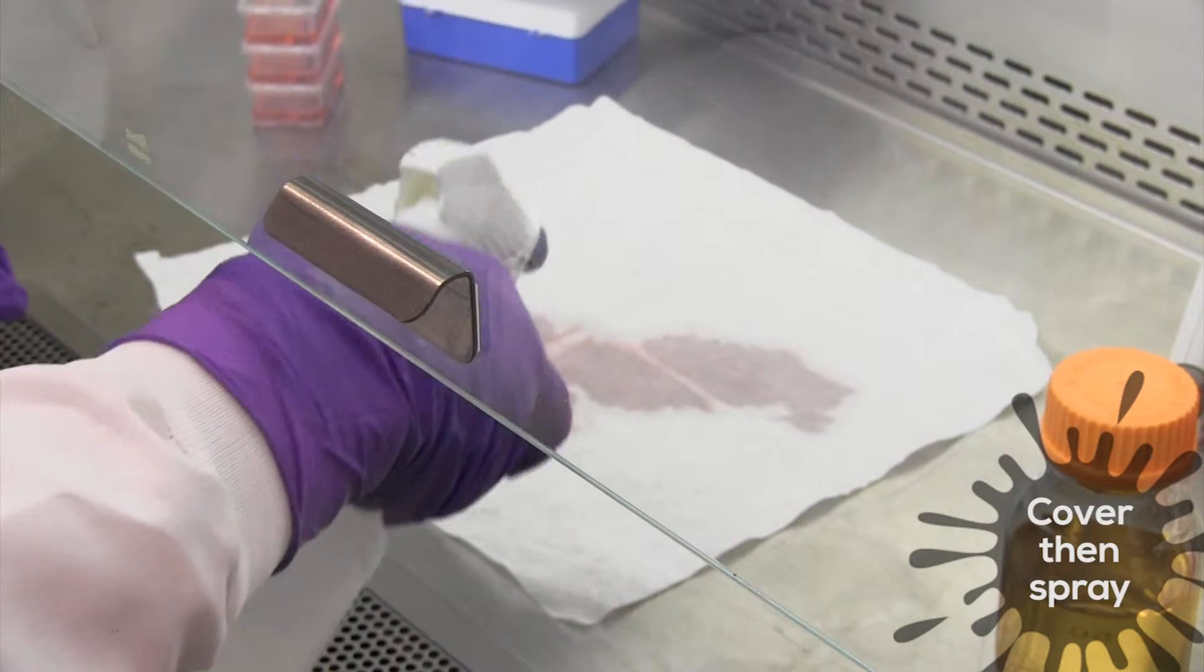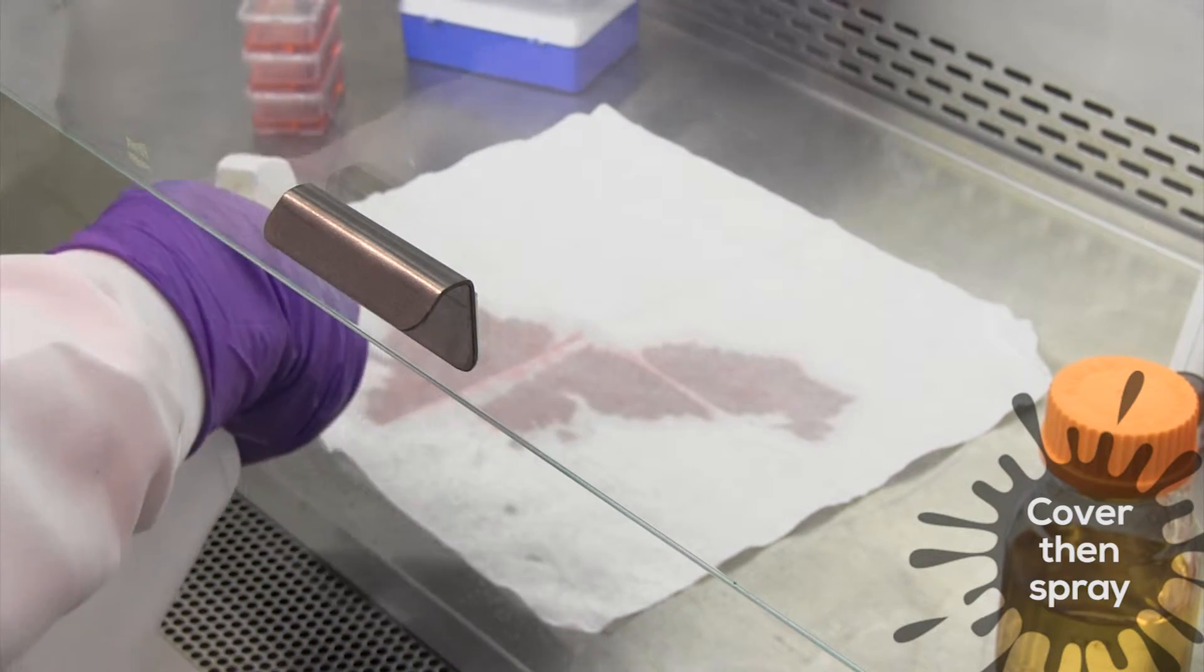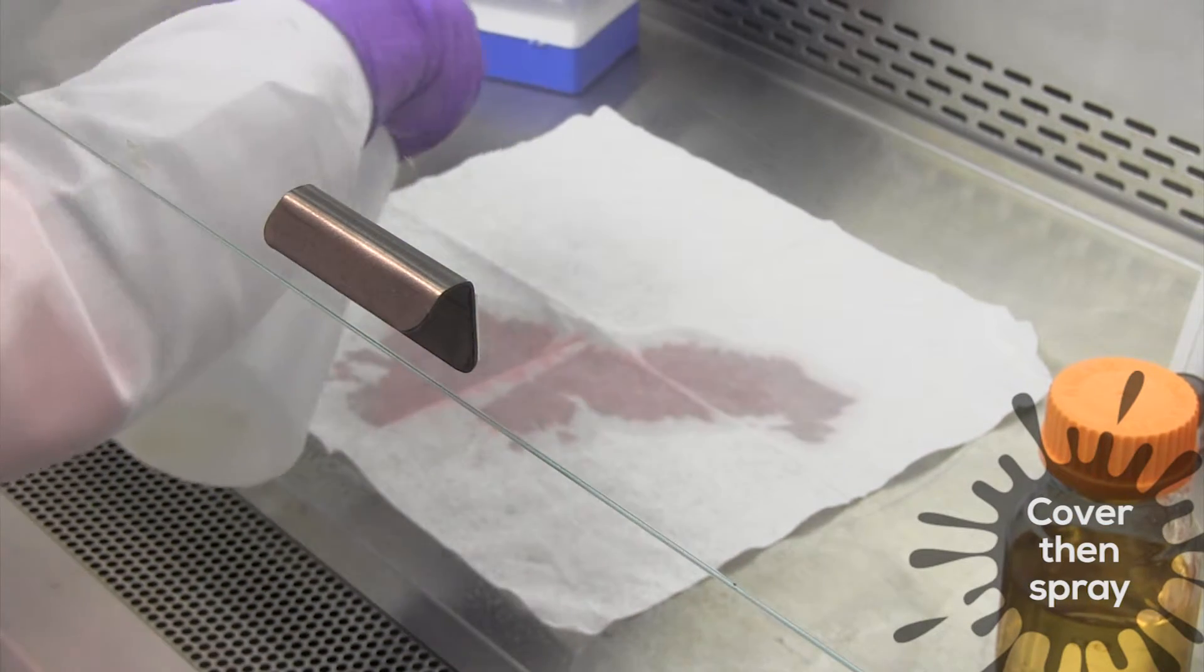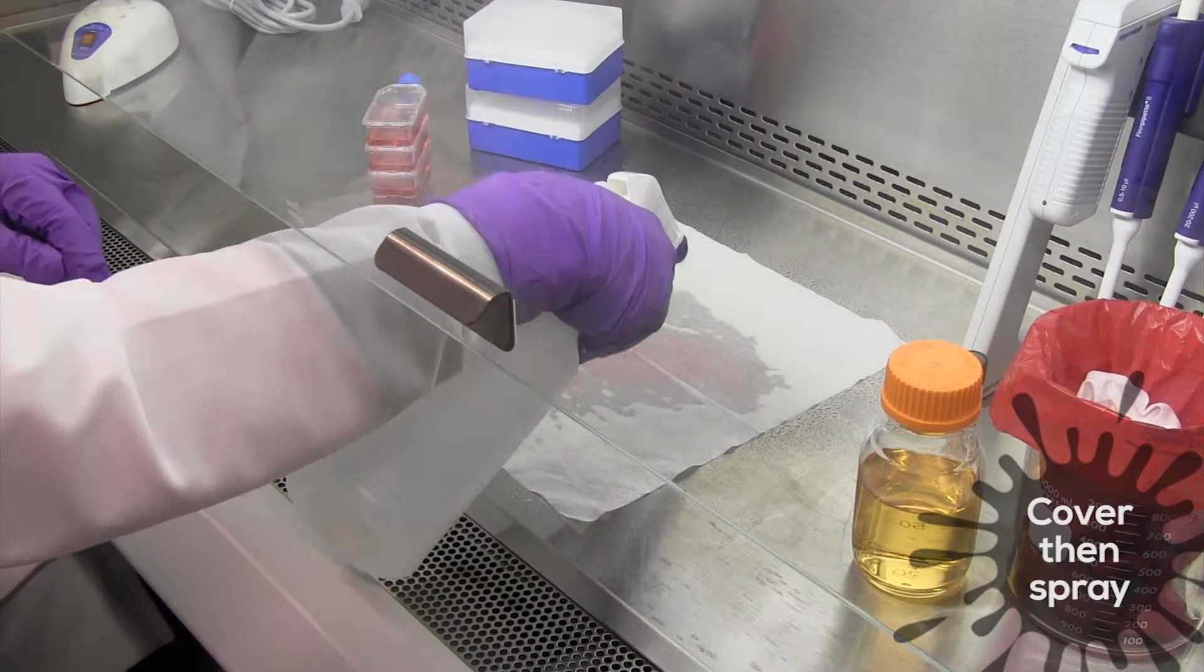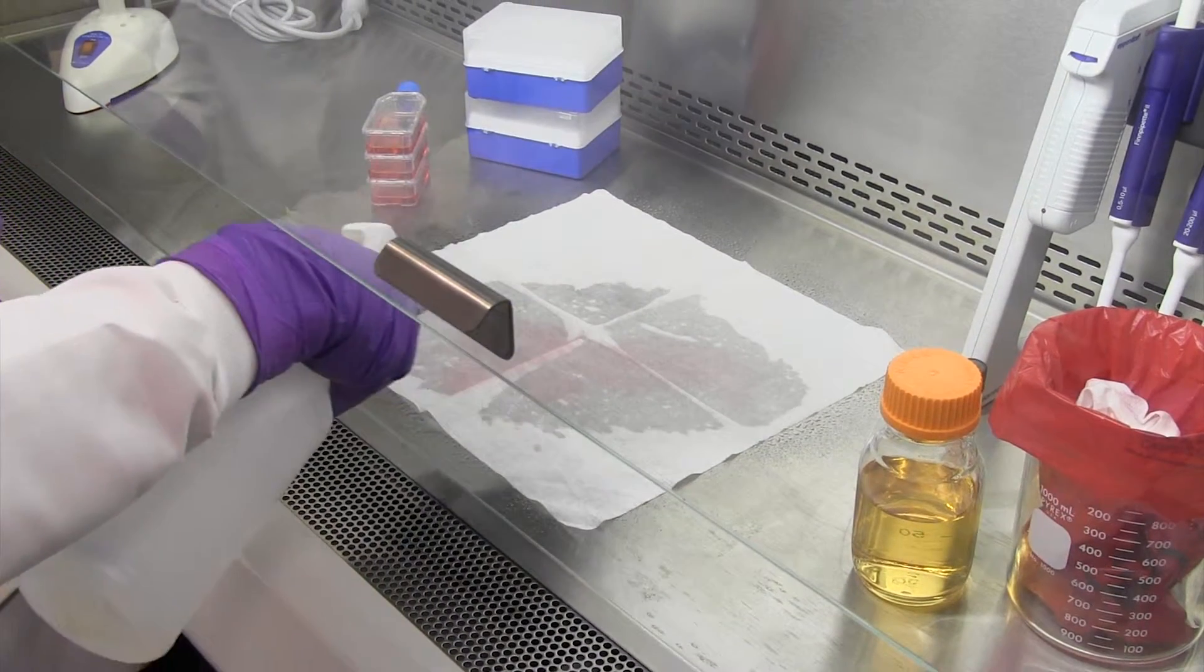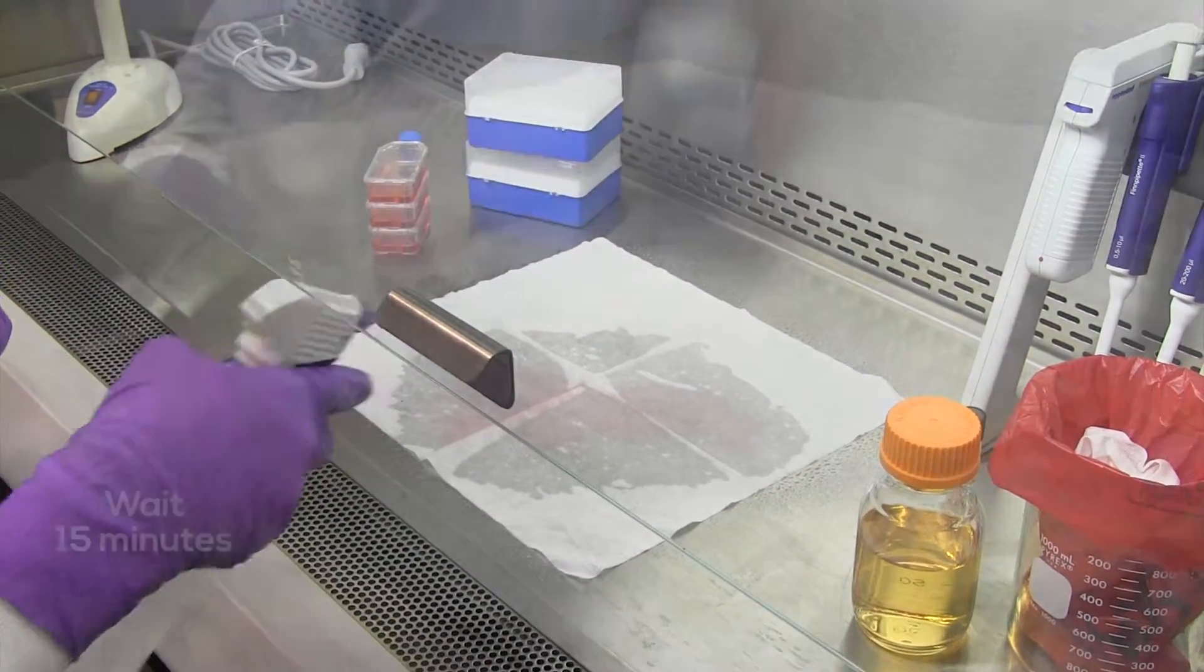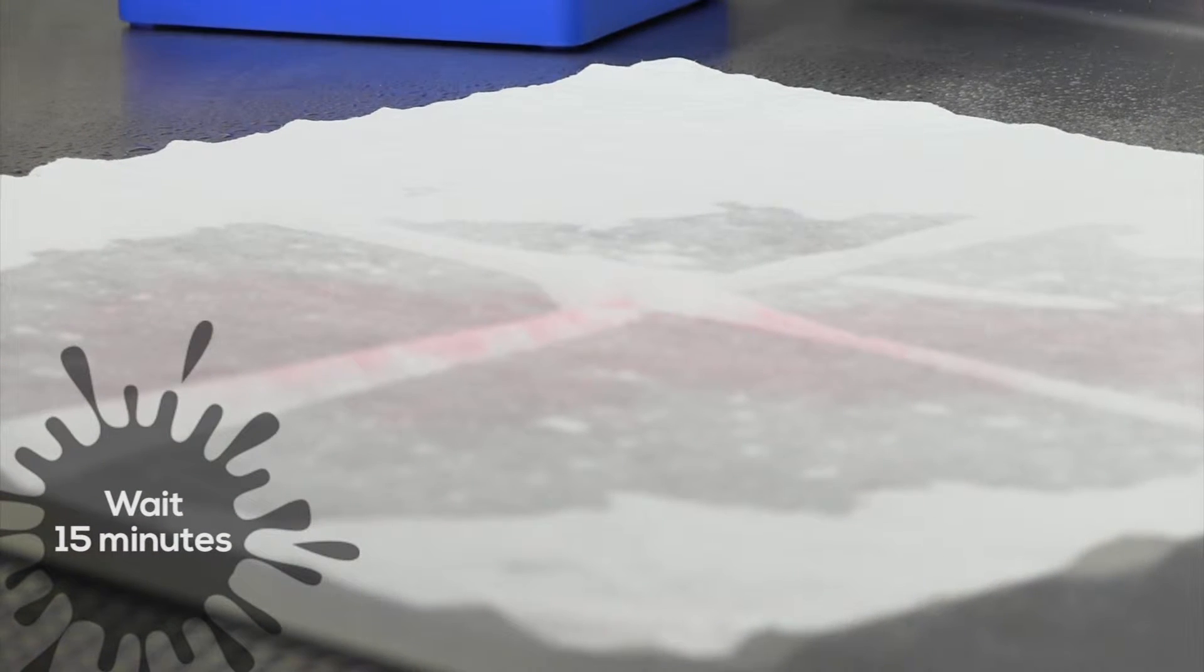Then, spray the absorbent with an appropriate disinfectant like bleach or NBAC2. Next, allow 15 minutes for the disinfectant to work, leaving the cabinet running.